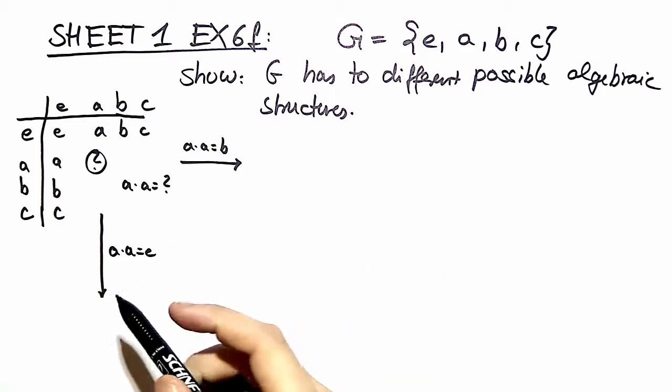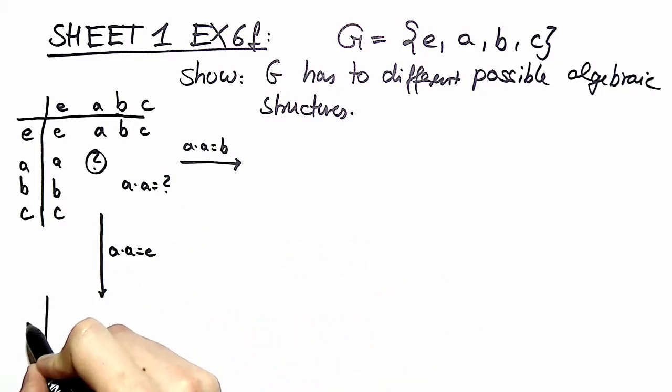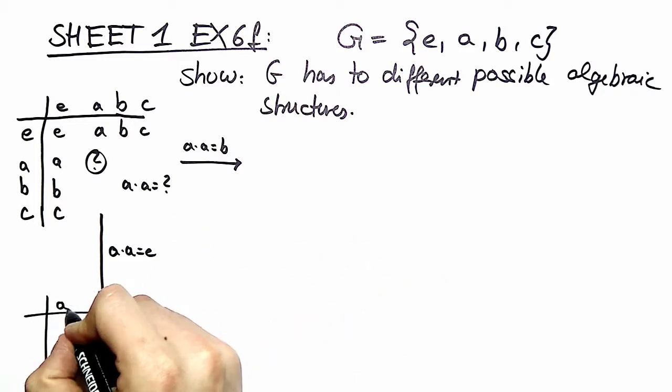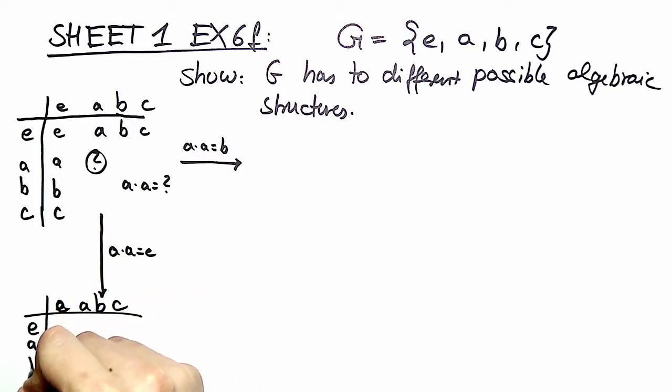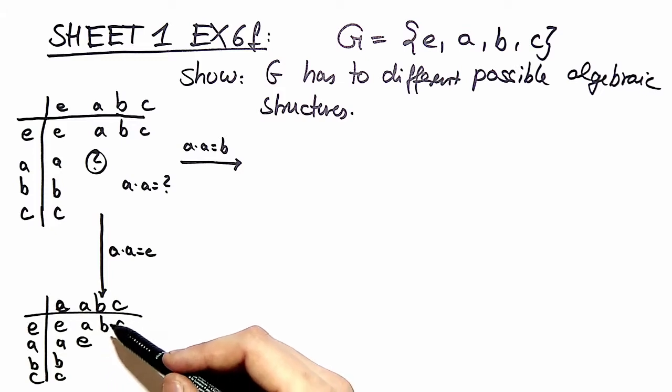Let's start by constructing the multiplication table for a times a equal to e. Okay we copy everything we've got and we got here e. Next question would be what can we write over here? What is the composition of b and a? So we got two different choices.